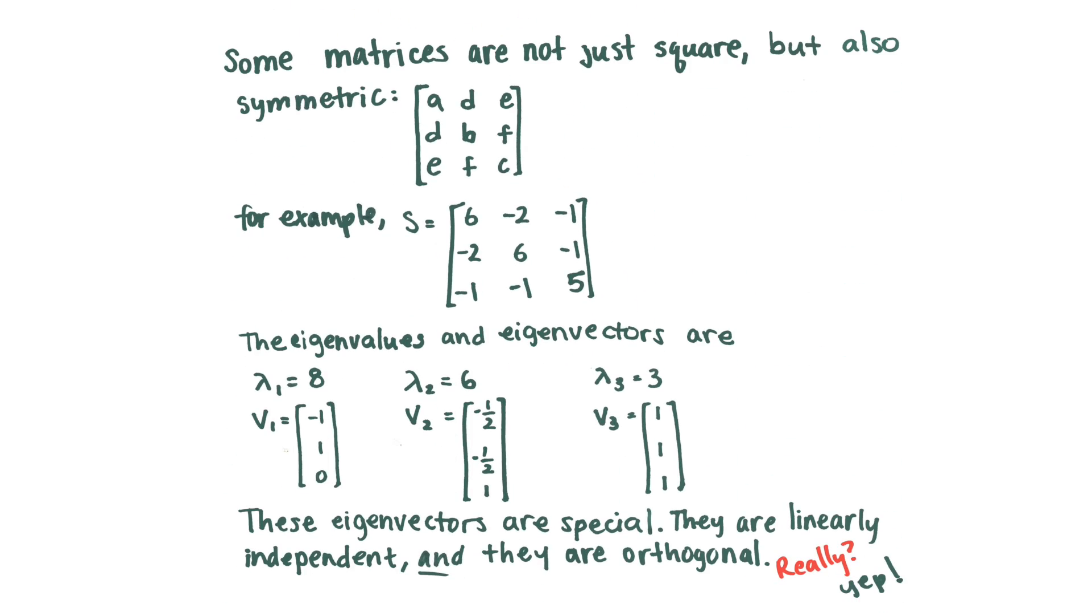Alright, now that you're back, some matrices are really special. They're not just square, but they're also symmetric, which means that they're of this form, where the rows and the columns could be reversed, and it would still be the same matrix. And you can see an example of that here. And we have a matrix S that's symmetric and square.